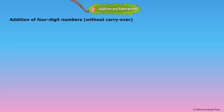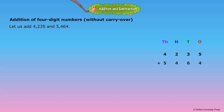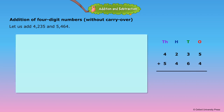Addition of 4-digit numbers without carryover. Let us add 4,235 and 5,464.